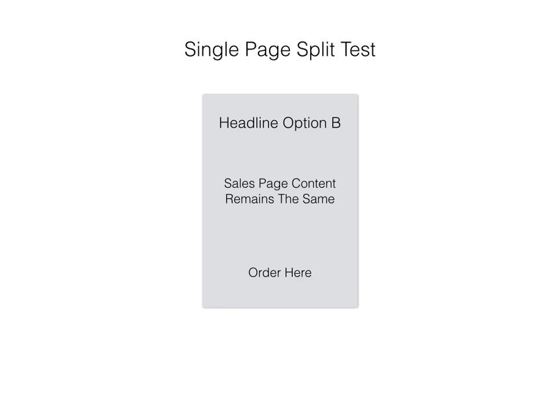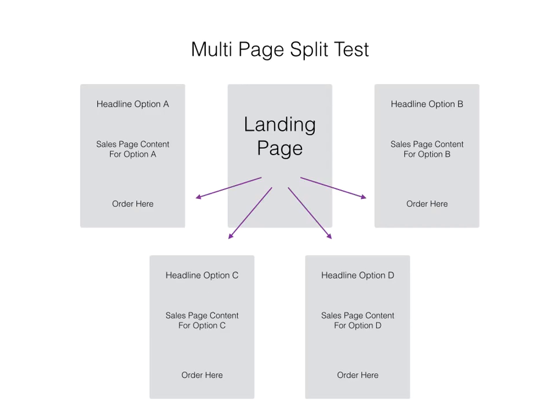One last thing about multi-page testing: you can test up to four different websites at a time. All of your traffic goes to the landing page and it splits that traffic across up to four completely different sales pages — so you can test two against each other, three against each other, or four against each other.